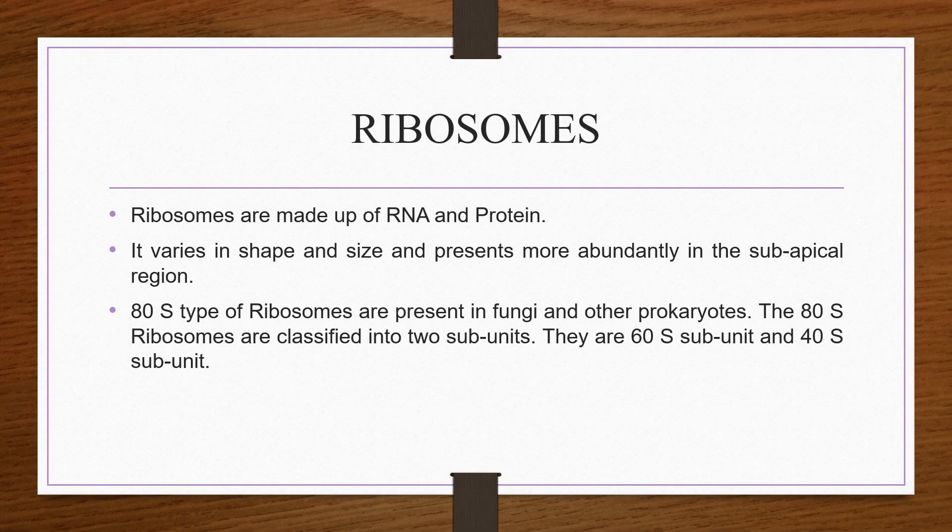Ribosomes. Ribosomes are made up of RNA and protein and vary in shape and size. They are present more abundantly in subapical regions. The 80S type of ribosomes are present in fungi. The 80S ribosomes are classified into two subunits: the 60S and the 40S subunits. The main function of ribosomes is protein synthesis.